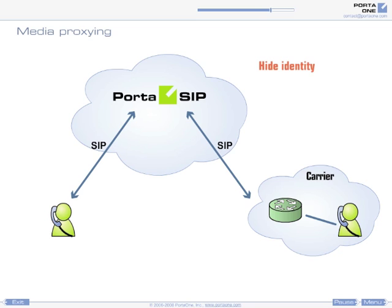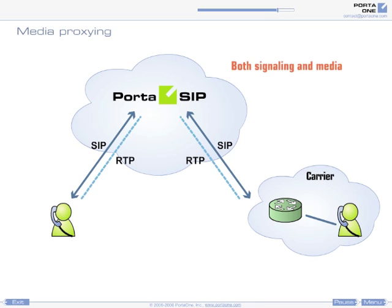For other carriers, where you would like to hide the identity of your customers, or if a certain vendor does not support NAT traversal, Portisip can proxy both signaling and media traffic. Portisip's media proxy provides NAT traversal functionality to enable customers connected via a private network to send and receive voice or video calls. You can dynamically define media proxy policies.